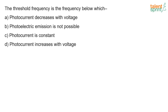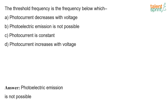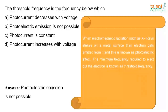The threshold frequency is the frequency below which photoelectric emission is not possible. When electromagnetic radiation such as X-rays strikes a metal surface, electrons get emitted from it — this is known as the photoelectric effect. The minimum frequency required to eject an electron is known as the threshold frequency.